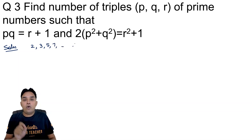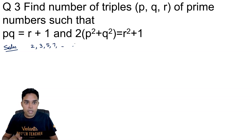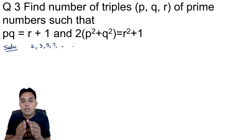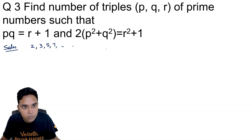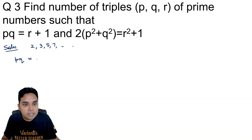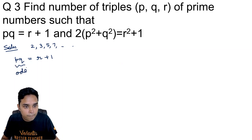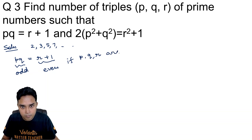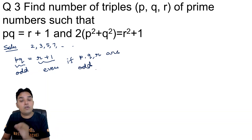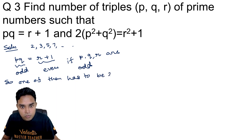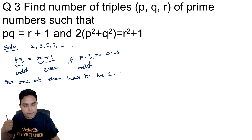If all three of p, q, r were odd primes, then pq would be odd and r plus 1 would be even — a contradiction. So at least one of them must be even, meaning at least one must equal 2, since 2 is the only even prime. If r equals 2, then pq equals 3, forcing p=1 and q=3, but 1 is not prime, so this is ruled out.